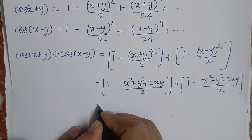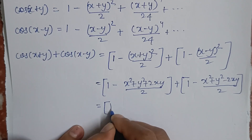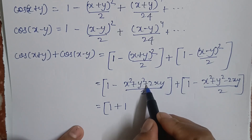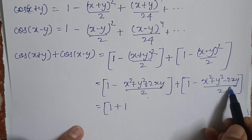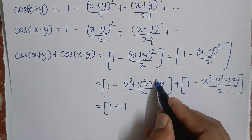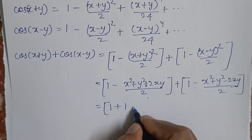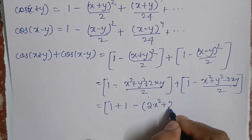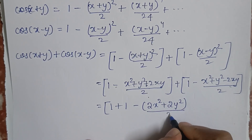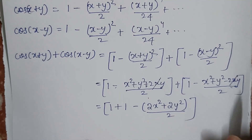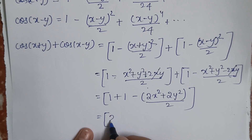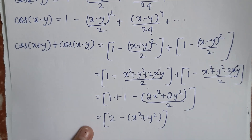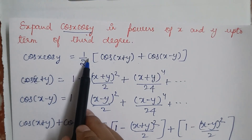Now combining terms: the 1 + 1 gives 2, and the +2xy/2 and −2xy/2 cancel out. What we are left with is 2 − (2x²+2y²)/2, which simplifies to 2 − x² − y².